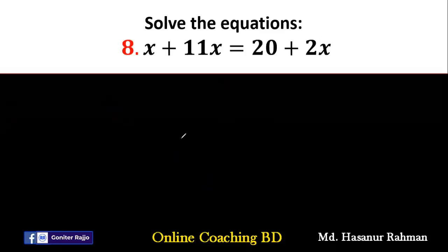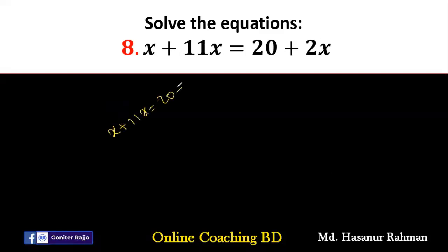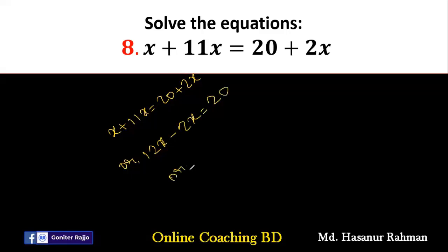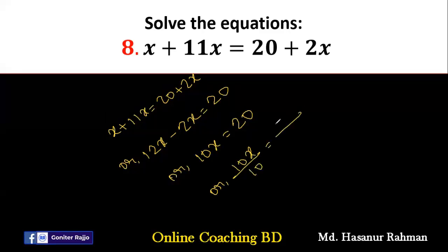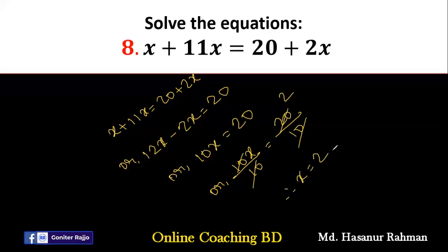Now number 8. Number 8 says x plus 11x equal to 20 plus 2x. x plus 11x is 12x. Moving 2x to the other side gives minus 2x equal to 20. So 12x minus 2x is 10x equal to 20. Now divide by 10: 10 divided by 10 is 1, and 20 divided by 10 is 2. So the final answer is x equal to 2.